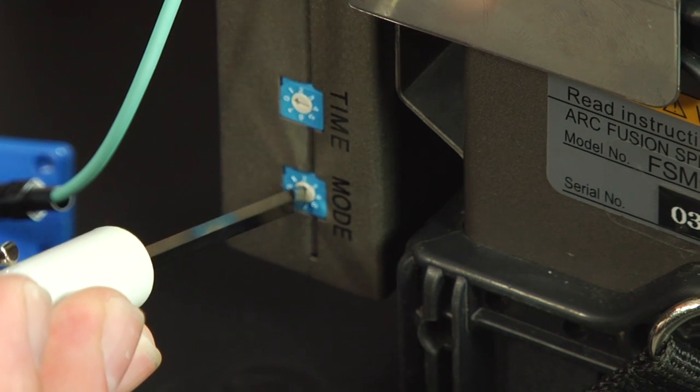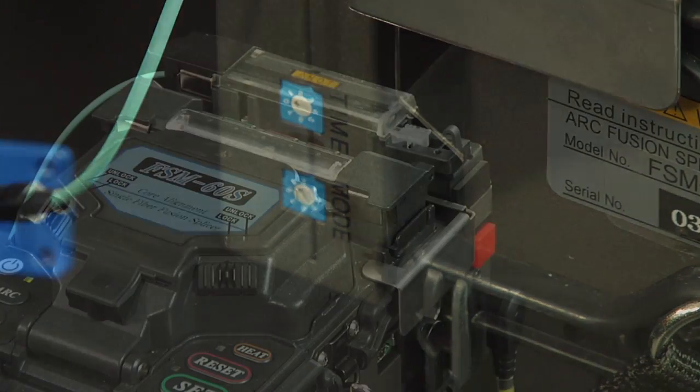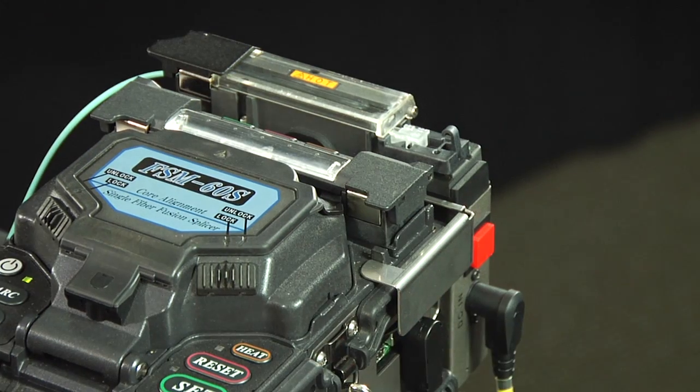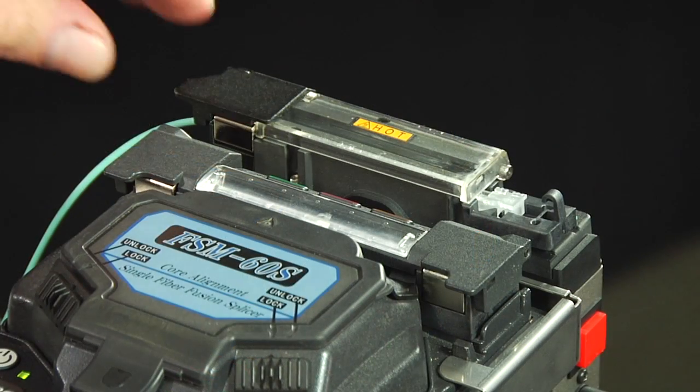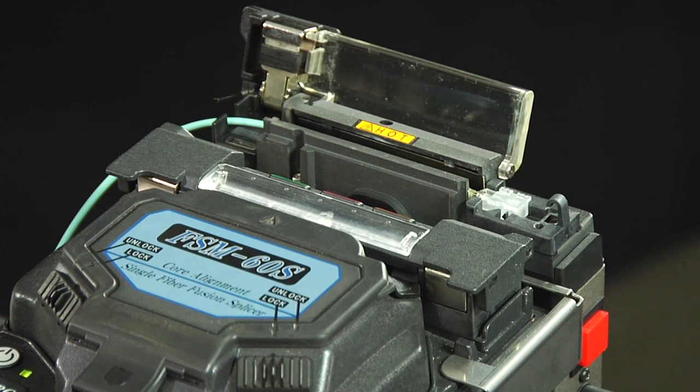Check the heater mode and refer to installation instructions for proper setting. Press the red button to start the heat cycle. After the heat cycle is finished, open the tube heater cover and allow the protective sleeve to cool for one minute.